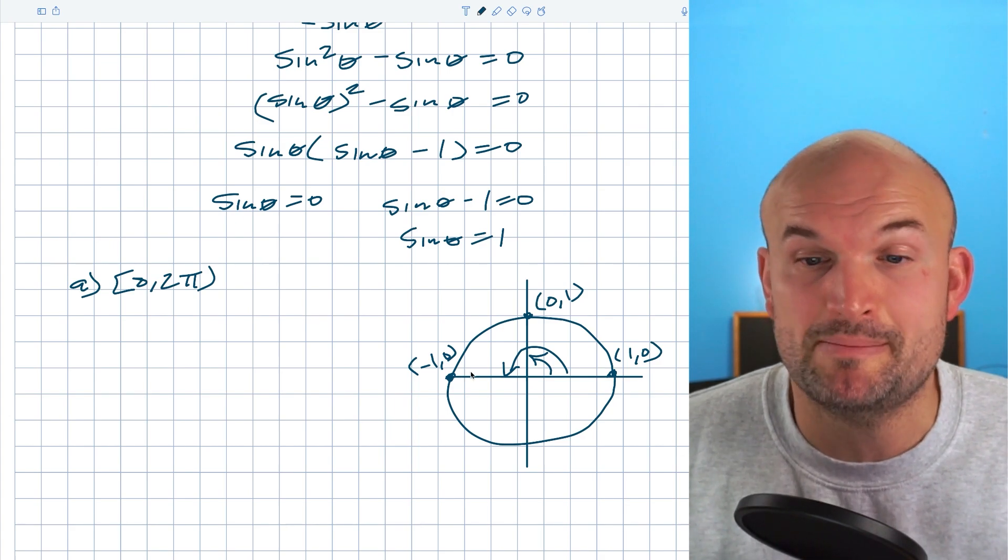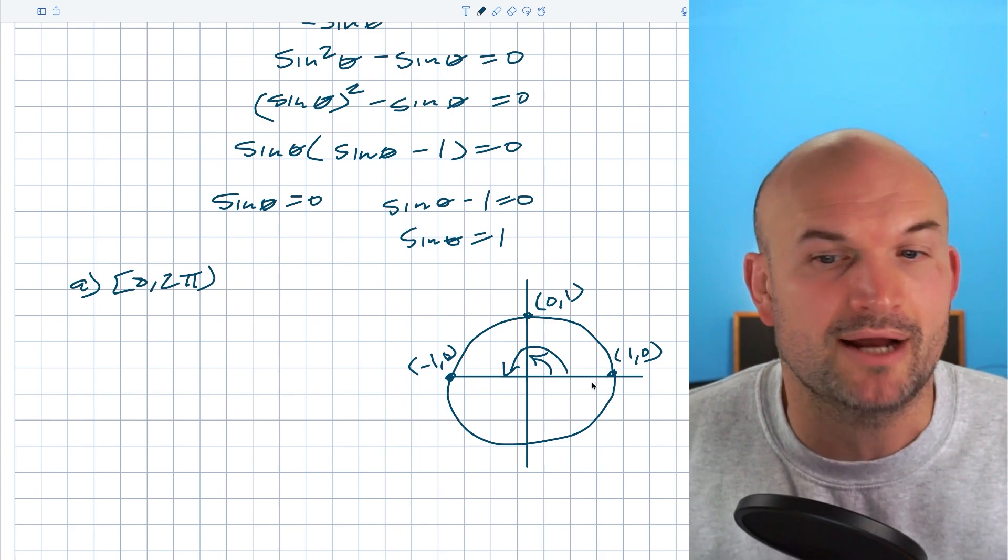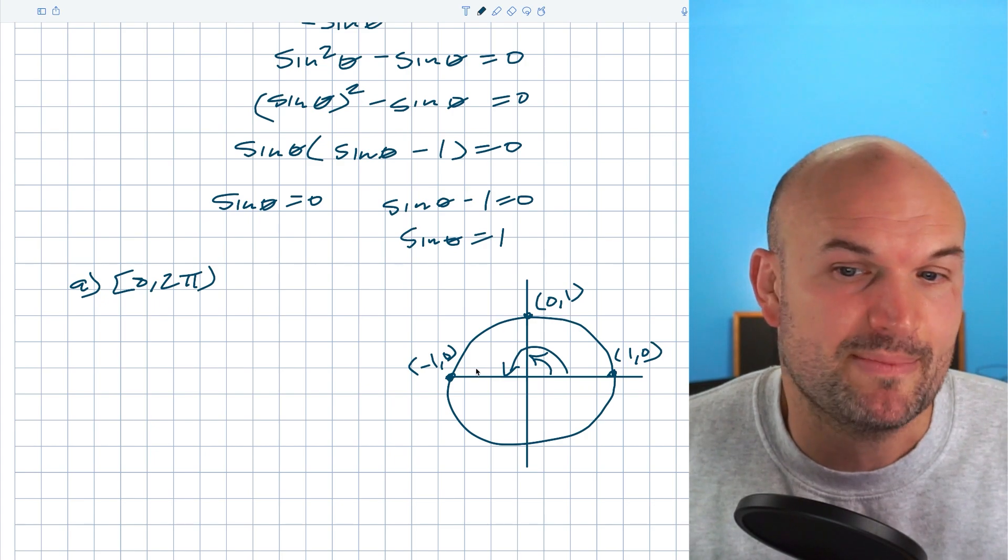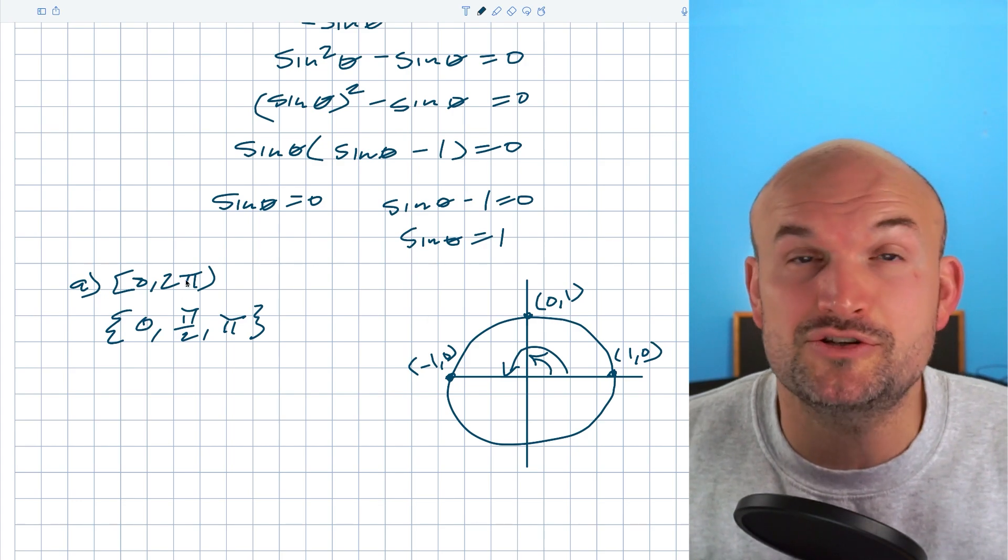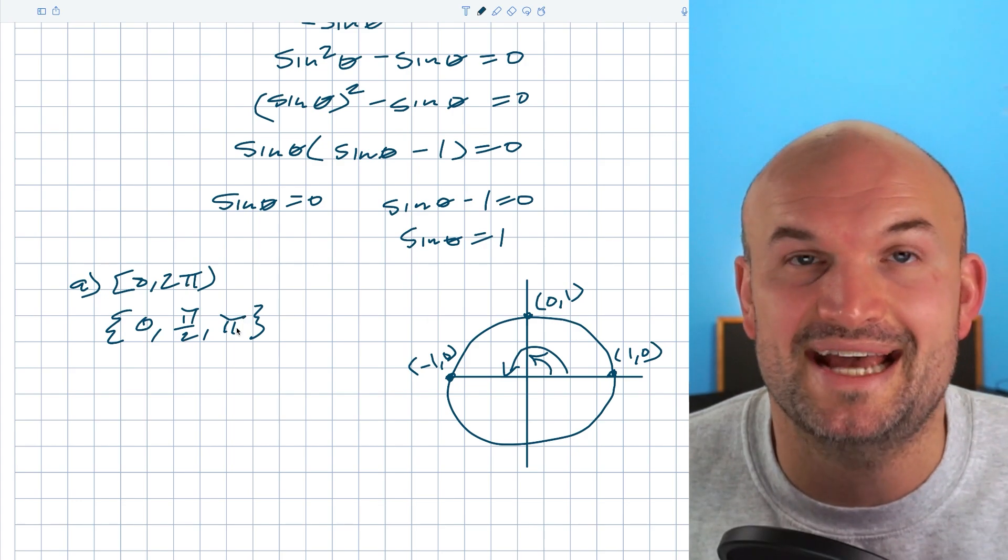So if we look at these solutions, we have the first point which is at zero radians. The next solution is here, which is going to be pi because all the way around would be two pi. So halfway around a circle is pi, and you can see here this angle is half of that which would be pi halves. So for the solutions on zero to two pi we have zero, pi halves, and pi.